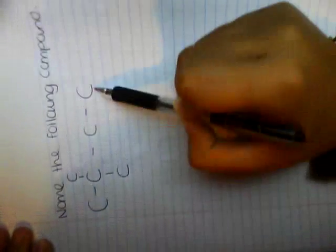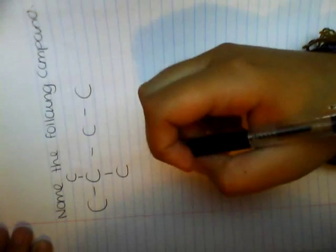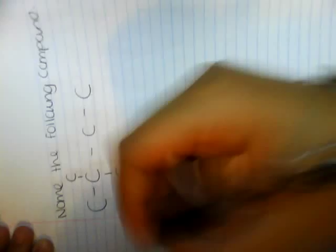However, when naming, we have to count just the right line. So 1, 2, 3, 4 — so it's four carbons. It's going to have a 'but.' And since they're single bonds, it's going to end with 'ane.'